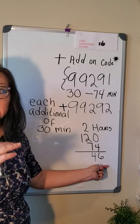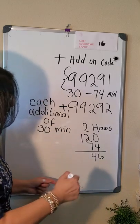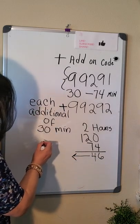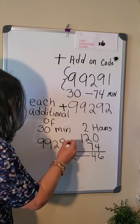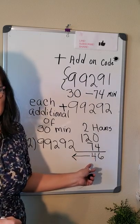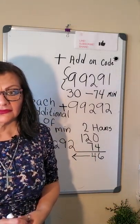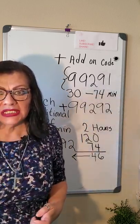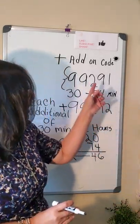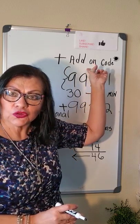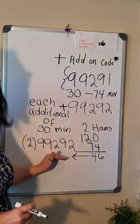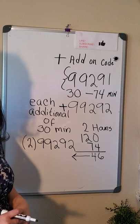We have 46 remaining minutes. For those 46 minutes, you're going to use 99292 two times — because you have 30 minutes, and then there are more minutes remaining. Each up to 30 minutes, you have to add 99292. That's why this is called an add-on code — for each additional 30 minutes, you keep adding your 99292.